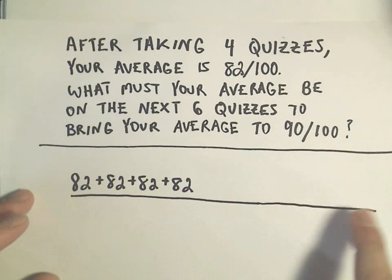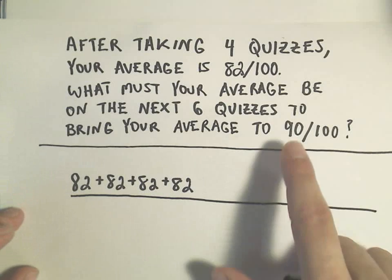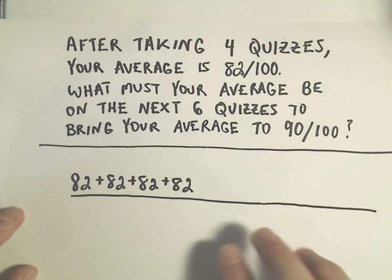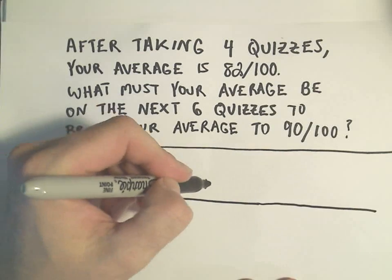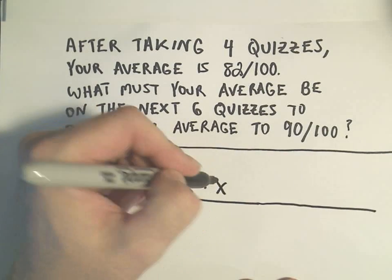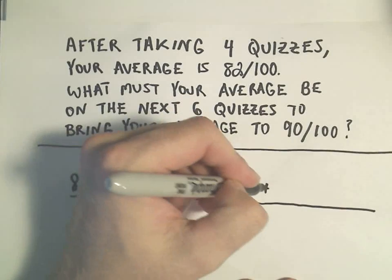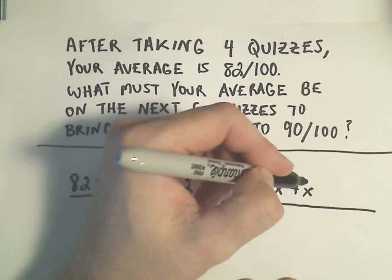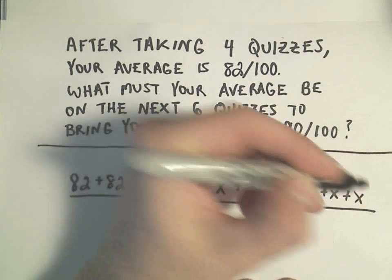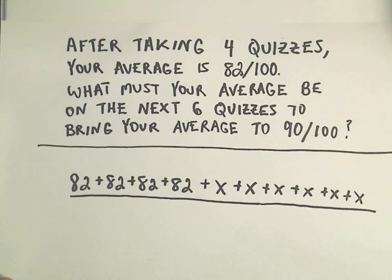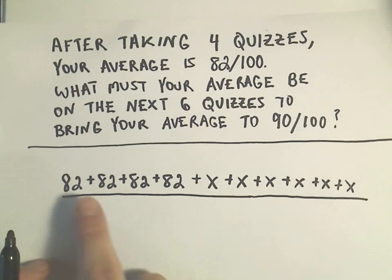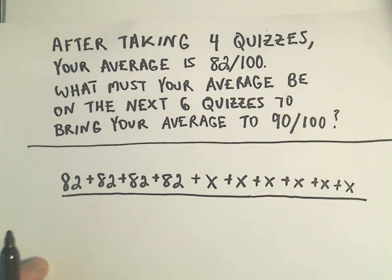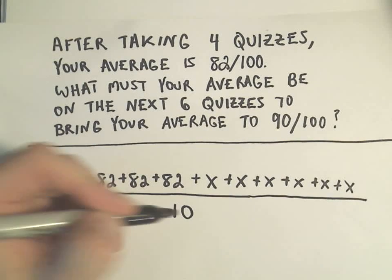Likewise, your last grades could be, maybe you make a couple hundreds and then you make a 92, who knows. But we can assume that they're all the same, your last six scores. So you're going to have six more quizzes to take. So we'll let x represent the average value on a quiz that you're going to have to make. So at this point, well, we've got ten things, ten quizzes, so we would have to divide this by ten.